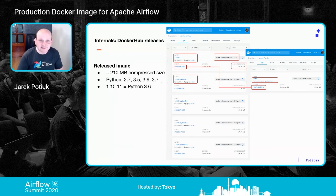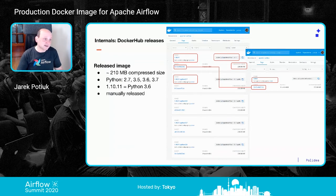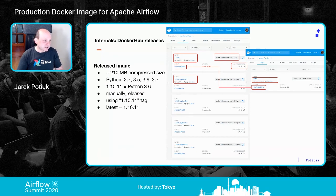This is a screenshot from Docker Hub. The image size is about 200 megabytes compressed — that's the amount of data you download when you pull it. When extracted locally, it's about four times larger, so around 800 megabytes uncompressed on disk. We have support for Python 2.7, 3.5, 3.6, and 3.7. Python 3.8 is not officially supported by Airflow 1.10, so it's not there. The 1.10.11 tag without a Python suffix defaults to Python 3.6.